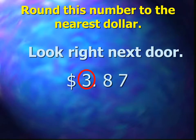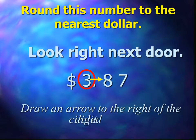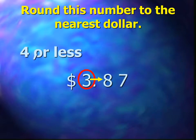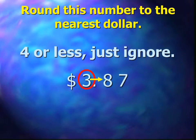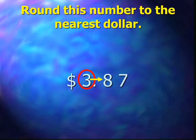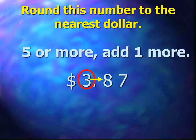Next, look right next door. Draw an arrow to the right of the circled digit. In this case, we are looking at the eight in the tenths place, which is actually 80 cents. Is the digit four or less? If so, just ignore. The eight is greater than four, so we need to go to the next line of the poem. Five or more, add one more.